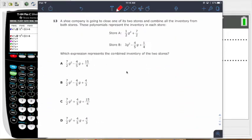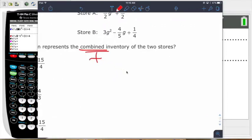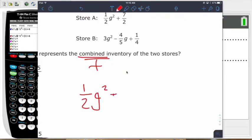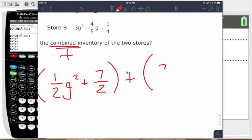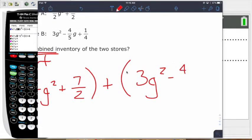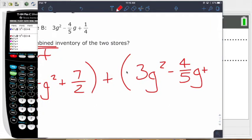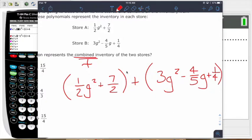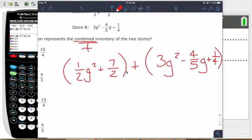Next one here. A shoe company is going to close one of its stores and combine all the inventory from both stores. These polynomials represent the inventory of each store. So you've got store A and store B, which expression represents the combined inventories. That means we're going to be adding two things. We're going to be adding 1/2 G squared plus 7/2, and we're going to add that to the other polynomial, 3G squared minus 4/5 G plus 1/4.